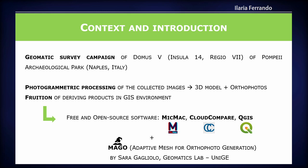We performed a geomatic survey campaign of Domus 5, Insula 14, Region 7 of Pompeii Archaeological Park, located near Naples in Italy. We collected a very high amount of images and processed them through photogrammetry to obtain a 3D model of the site and then the orthophoto. Finally, we make these products available through a GIS environment.